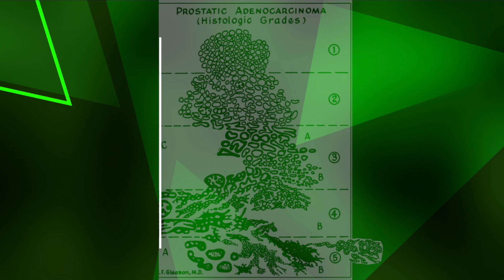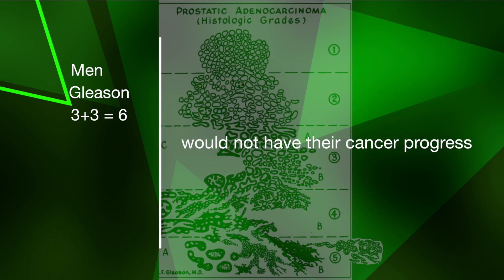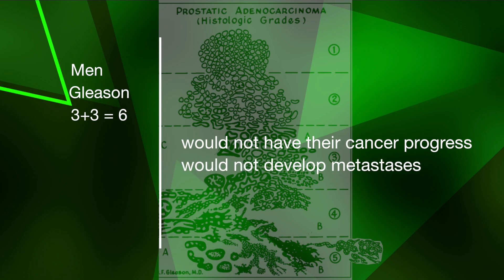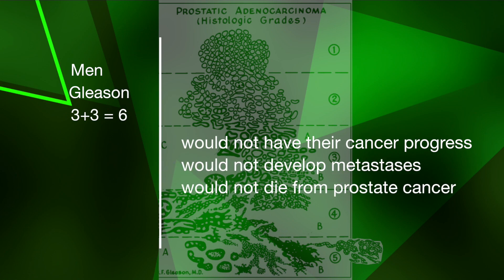From then on, doctors could be confident that men with a Gleason score of 3 plus 3 equals 6 would not likely have their prostate cancer progress, nor develop metastases, nor die from prostate cancer.